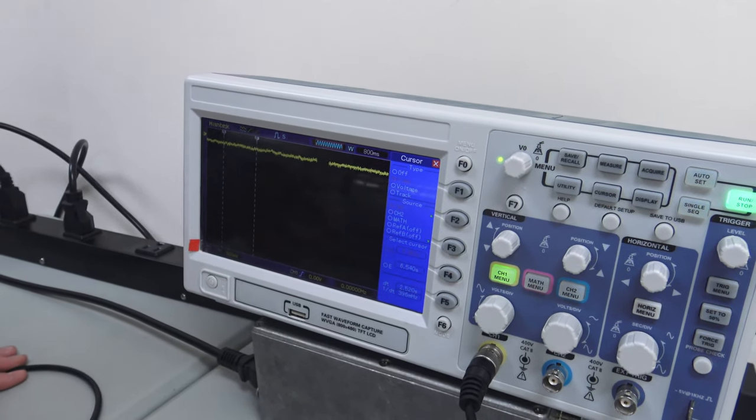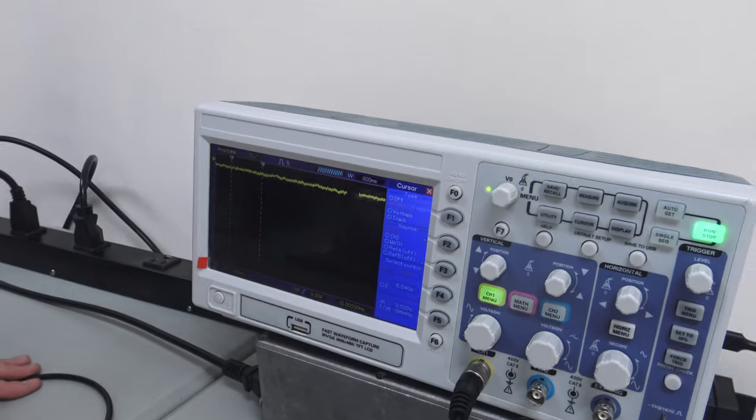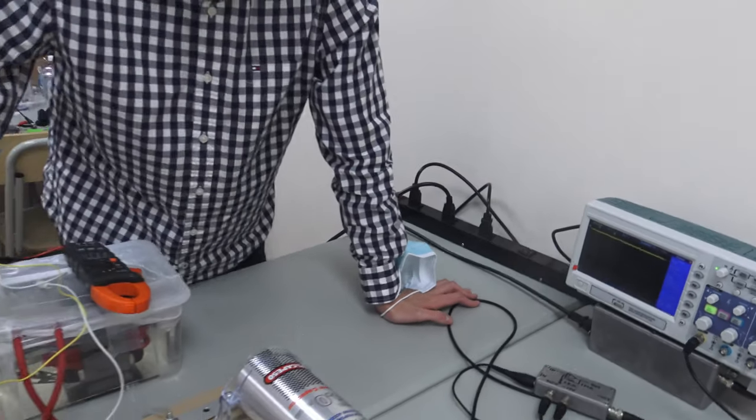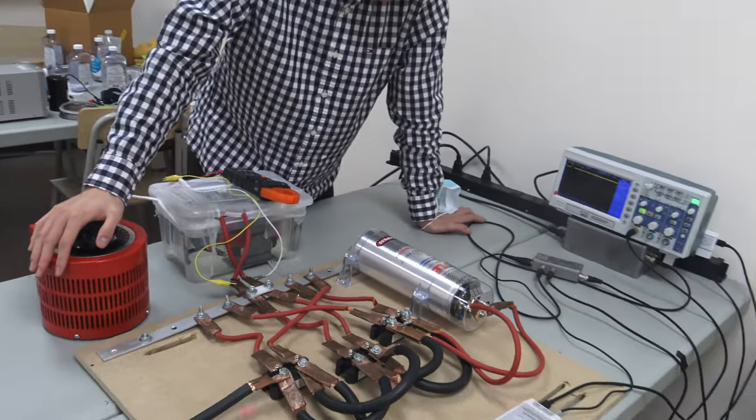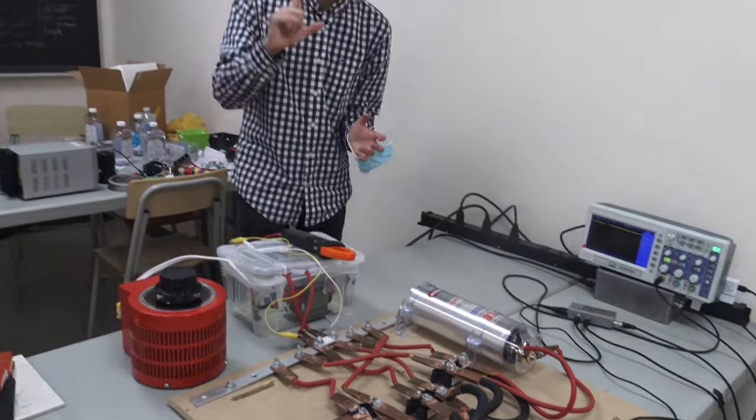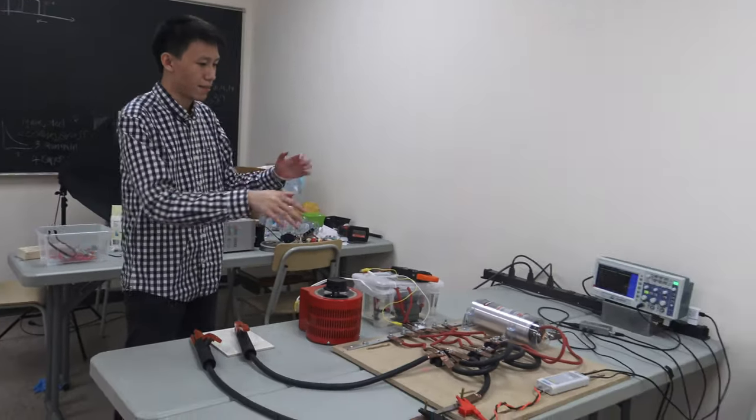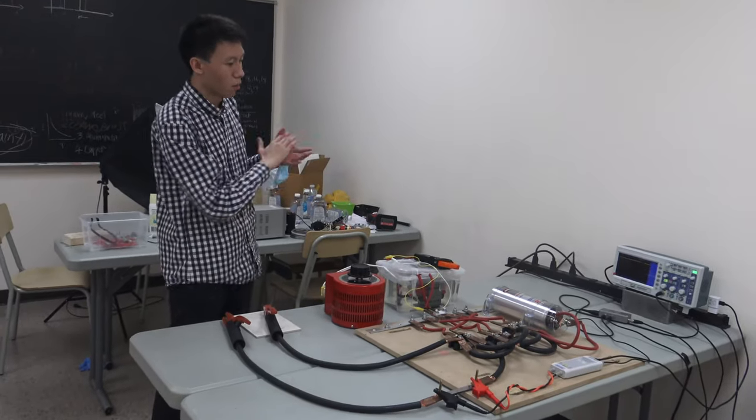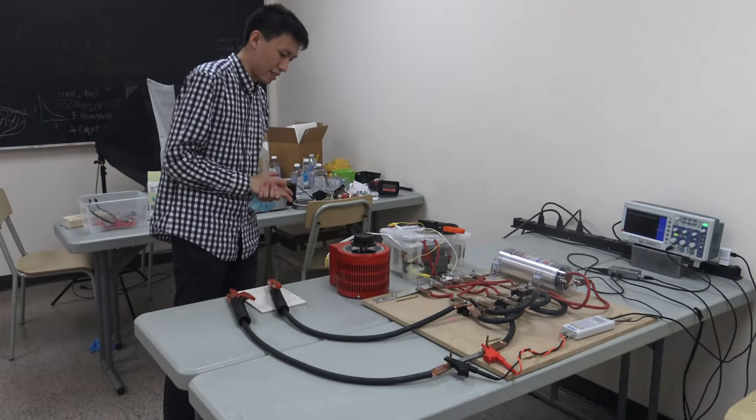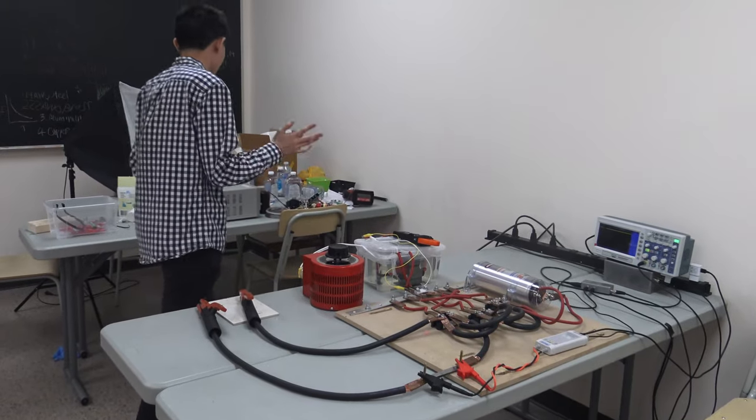And then depending on how long that dip is we can figure out how long it takes for the fuse to blow. And then how high that is will tell us exactly how much current is flowing. We have some amplification factors along the way but should all be proportional and good.